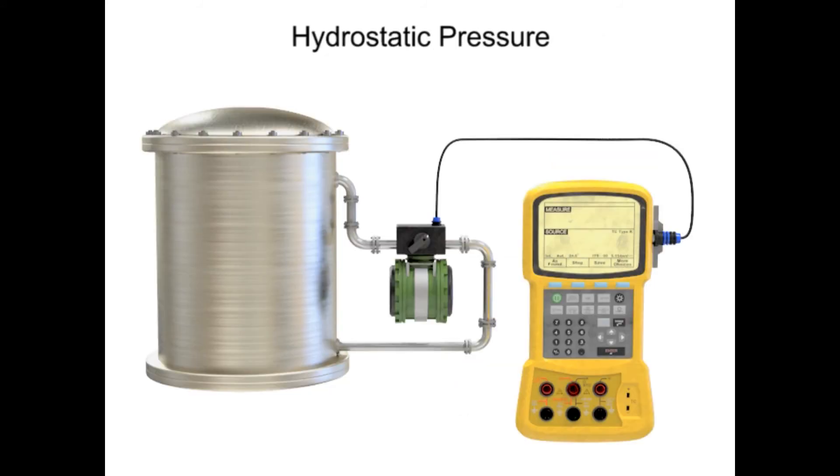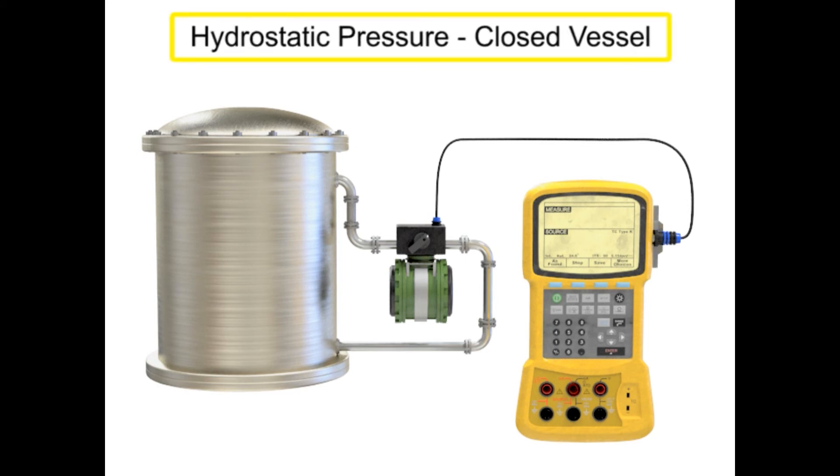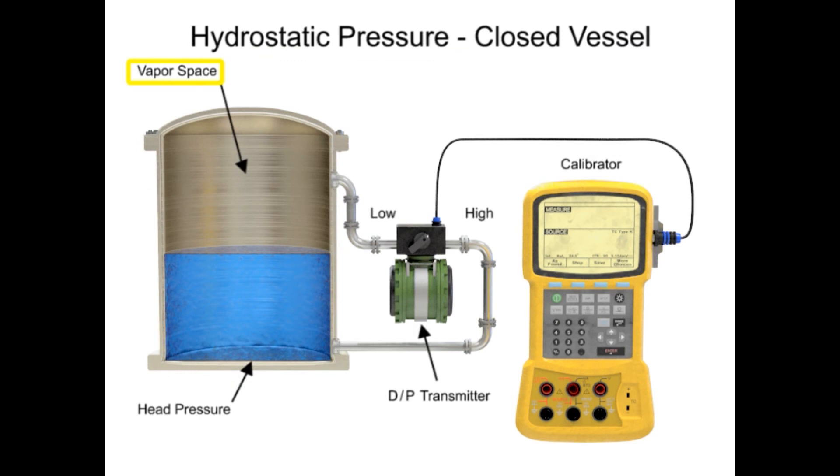Hydrostatic pressure can only be calculated from an open container. Within a closed vessel or pressurized vessel, the vapor space above the column of material adds pressure and results in inaccurate calculated values.